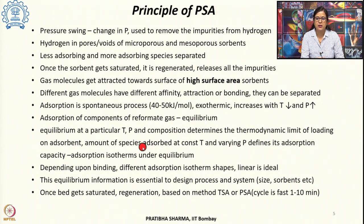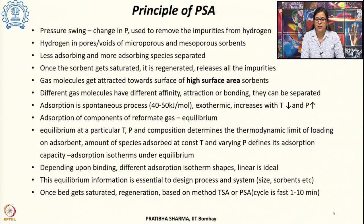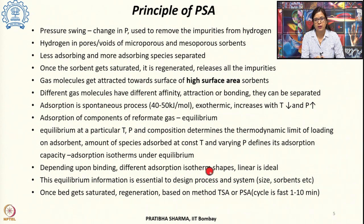The amount of species that can be adsorbed at a constant temperature, varying the pressure, gives us different adsorption isotherms under the equilibrium state. Depending upon the type of bonding and attraction a molecule feels towards the surface, the isotherm will have a different shape. The preferable isotherm for pressure swing adsorption is a linear one — that is ideally required.